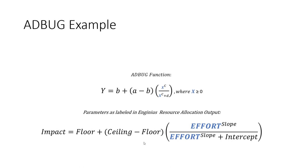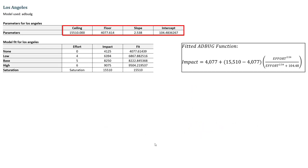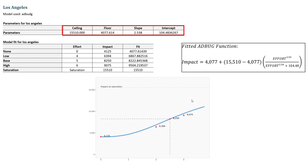After running an adbug-fitted model in the reallocator, the output shows parameters for each of the 14 markets. Focusing on Los Angeles, I take the estimated ceiling, floor, slope, and intercept parameters and map them back onto the equation. Using the different effort levels, I can recreate the curve in Excel. The blue curve represents the adbug-fitted function, and the red dots represent the actual original input data. The curve doesn't fit perfectly, but it's a close fit.